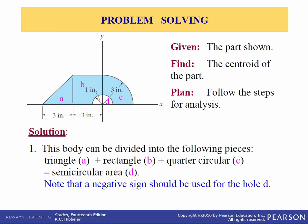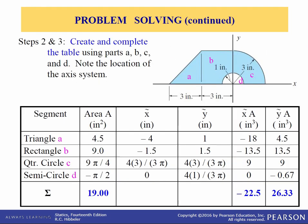Now let's do a problem with a hole in it. We're given this two-dimensional planar part and we want to find the centroid. We'll divide the body into four pieces: triangle A, rectangle B, quarter circle C — meaning the entire quarter circle — and semicircular area D, which is the hole, so we treat its area as negative. For triangle A: area is one-half times three times three, or 4.5 square inches. The x-tilde is negative four inches: we go over three, then one-third of its base is one inch, but it's in the negative direction.